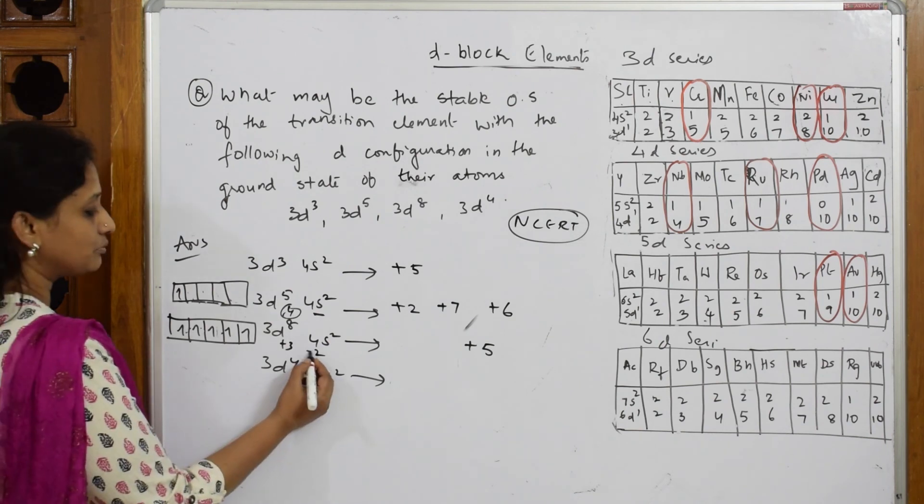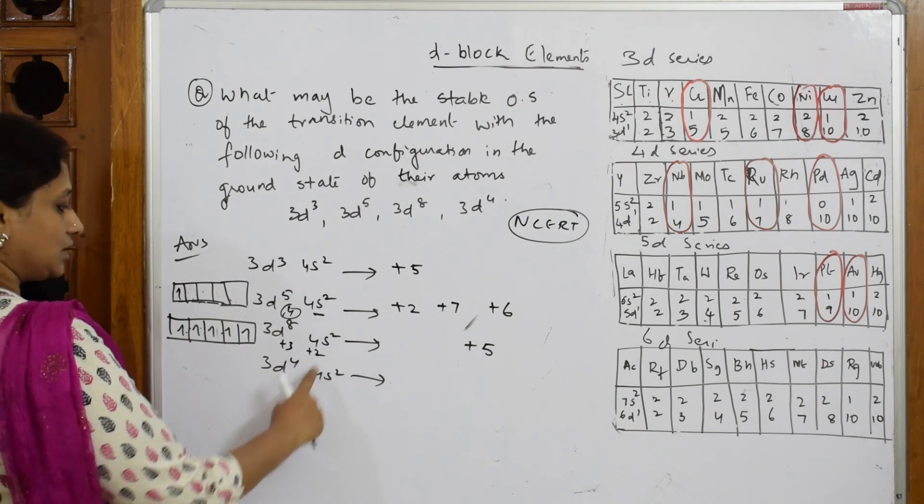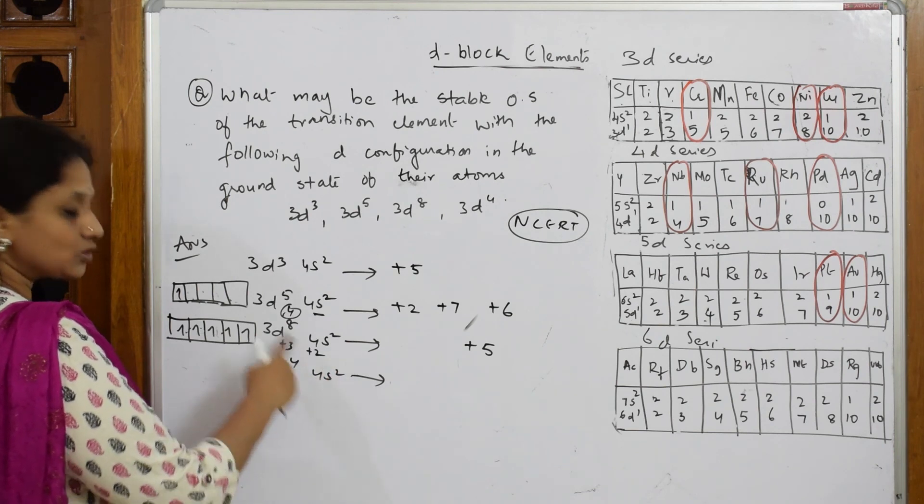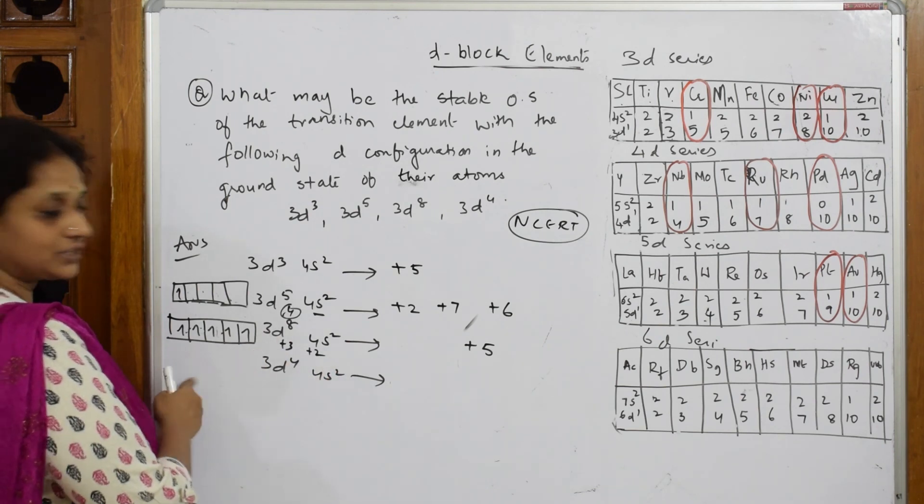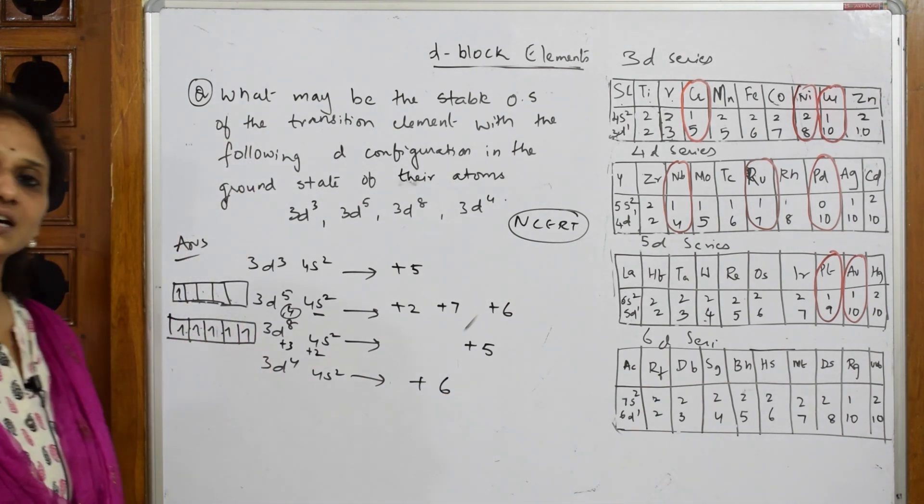Two from here, 3 from here - after removing those 3 it has become half-filled. But let us see: +2 is done, +4 also I can remove easily because the leftover is stable configuration. So the oxidation state can be +6. This is how you answer the question.